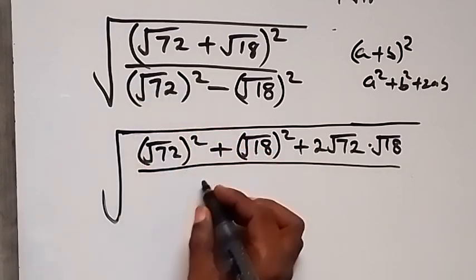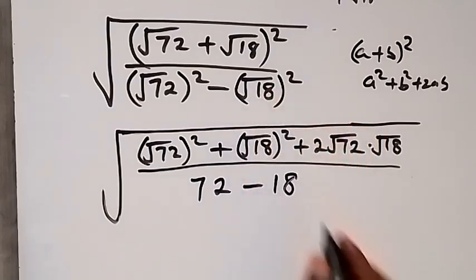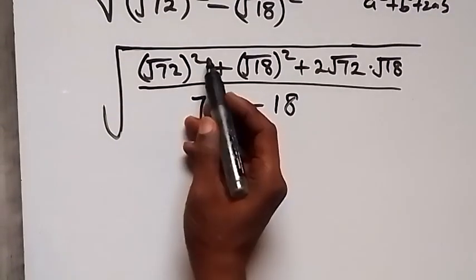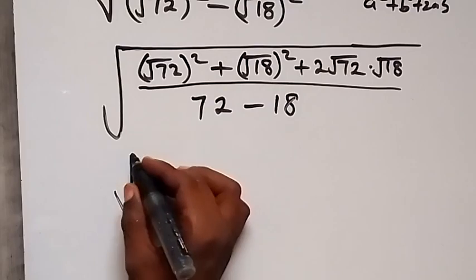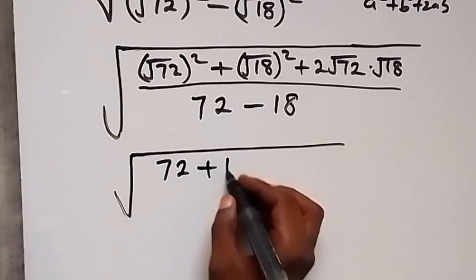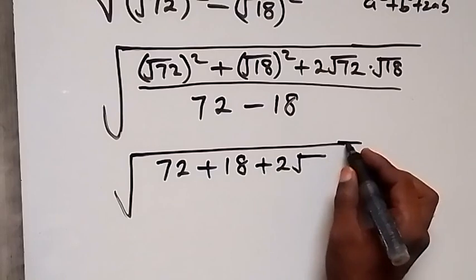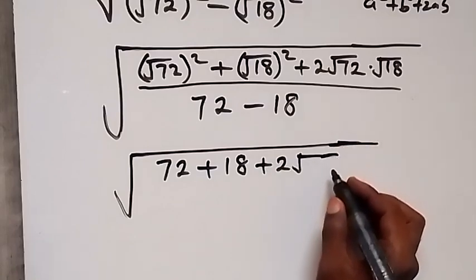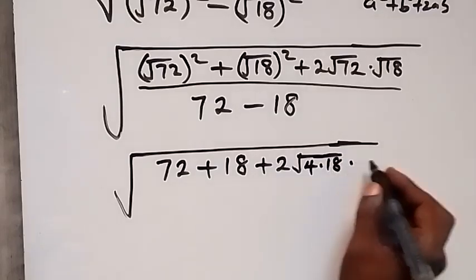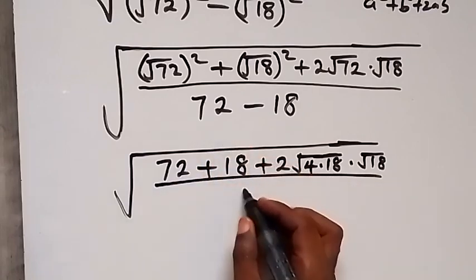The square and square root cancel each other, so we simply have 72 minus 18 in the denominator, which gives 54. The numerator becomes square root of (72 plus 18 plus 2 times root 72 times root 18). We express root 72 as root(4 × 18), so we have 2 times root 18 times root 18.